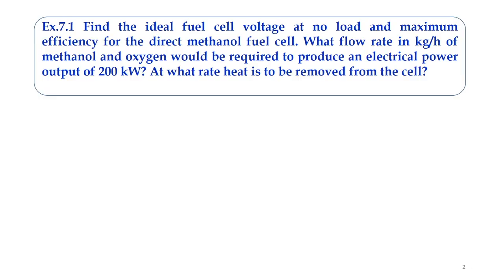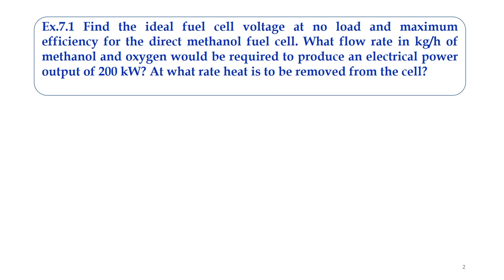Dear students, today we will be discussing numerical problems to strengthen the understanding of the content we have discussed in the last three classes. Let us take the first example: find the ideal fuel cell voltage at no load and maximum efficiency for the direct methanol fuel cell. What flow rate in kg per hour of methanol and oxygen would be required to produce an electrical power output of 200 kilowatt? Additionally, we need to find out the rate of heat to be removed from the cell.